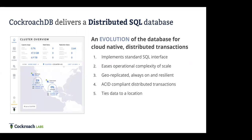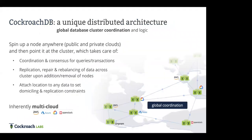The way we define distributed SQL: first, it's SQL — there needs to be a standard SQL interface, and there are lots of things we did in this release around that. We need ease of scale — either elastic or general linear scale without added complexity. Geo-replication is a key feature, ensuring distributed transactions can happen across multiple regions. And of course being always-on, resilient, ACID-compliant with serializable isolation, and geo-partitioning data to tie it to a location.